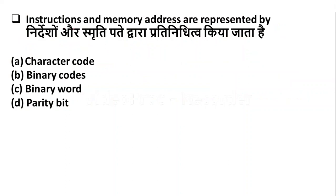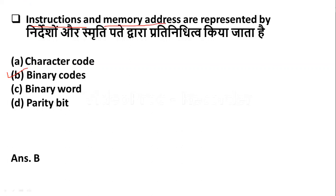Instructions and memory addresses are represented by — Option A: character code. Option B: binary codes. Option C: binary word. Option D: parity bit. Here the right answer is Option B — binary codes. Instructions and memory addresses are represented by binary codes.